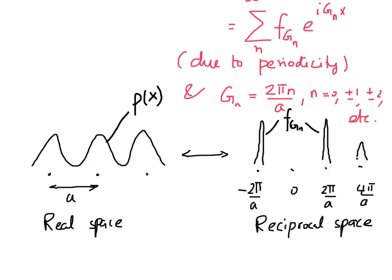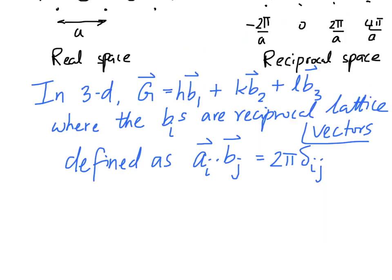Let us now move on to three-dimensional situations. So, here is the three-dimensional generalization where G now becomes a vector in three-dimensional space written in terms of the three reciprocal lattice vectors b₁, b₂, and b₃. And h, k, l are, of course, integers.